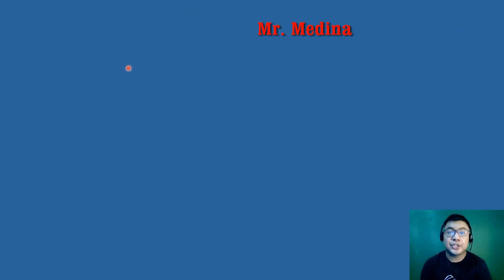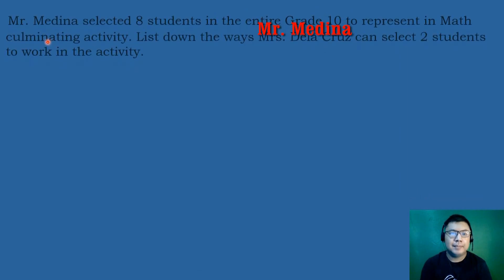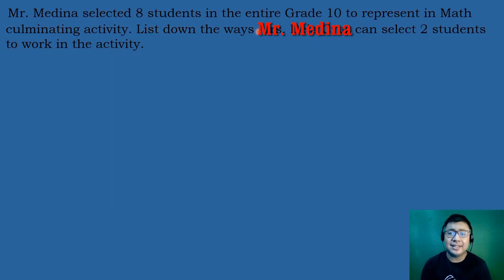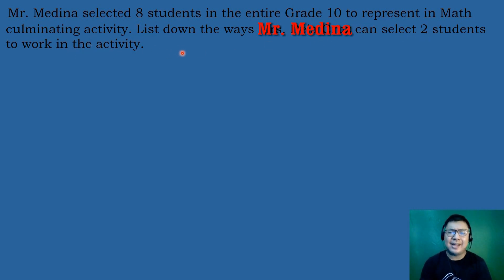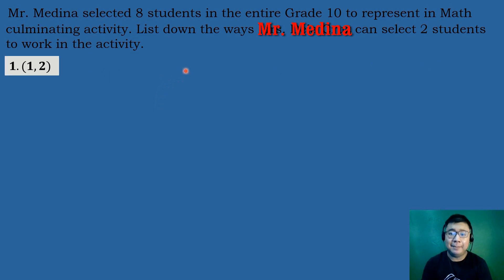For our next example: Mr. Medina selected eight students in the entire Grade 10 to represent in a math culminating activity. List down the ways Mr. Medina can select two students to work on the activity. Since order is not important, this is an example of combination.